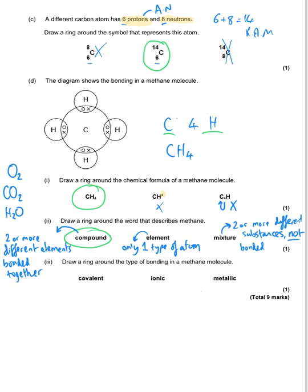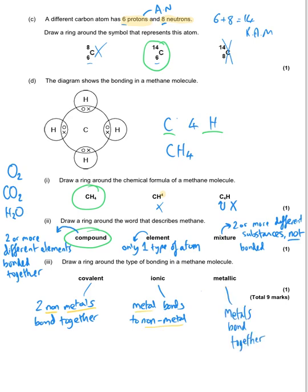The last part asks: draw a ring around the type of bonding in a methane molecule — covalent, ionic, or metallic. More about this in a different video, but briefly: covalent happens between nonmetals, ionic is between a metal and a nonmetal, and metallic is obviously only metals. Since we've got carbon and hydrogen, which are both nonmetals, the answer is covalent bonding.